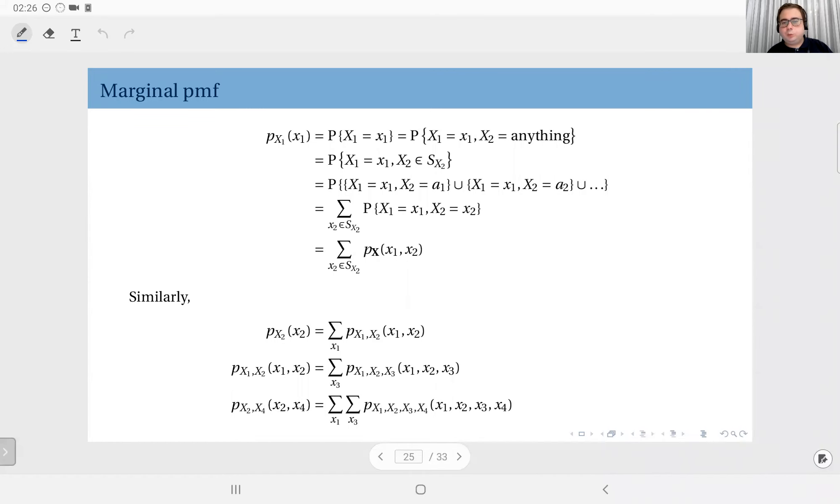An important question is, when you have the joint distribution in the form of a joint PMF, that gives me the information about how those random variables, which are the components of the random vector, behave together.